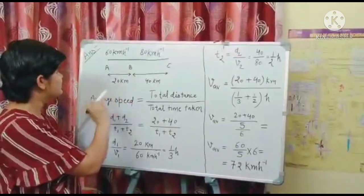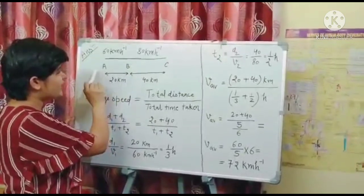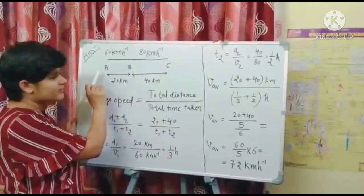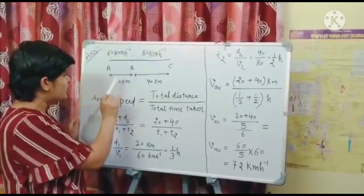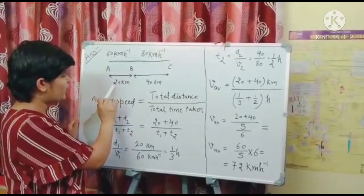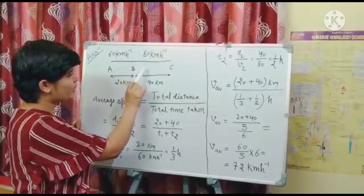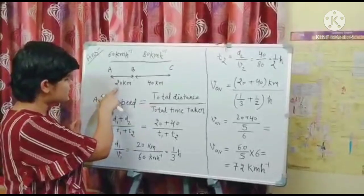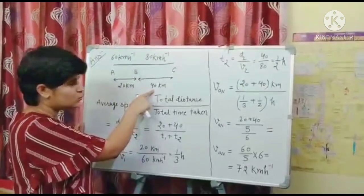Now let's see the answer. In this question, train starts from A point and then goes to the B point. And the distance between A and B point is 20 km. Then B point to C point and the distance is 40 km. So this distance is D1 and this distance is D2.